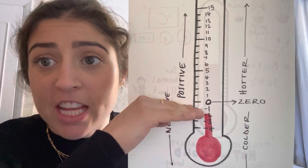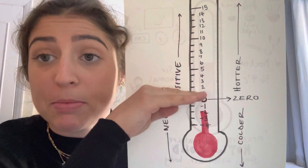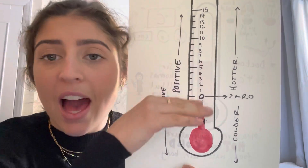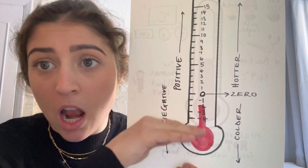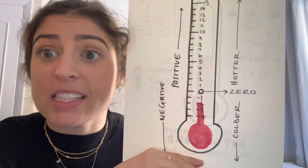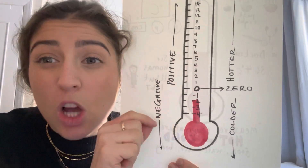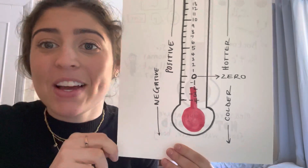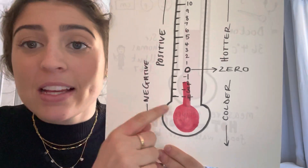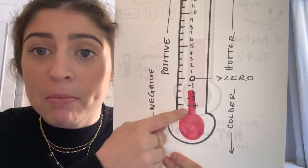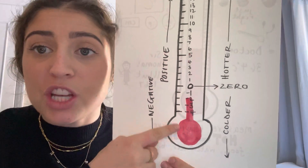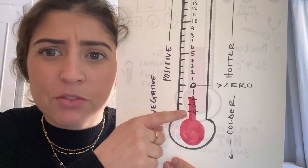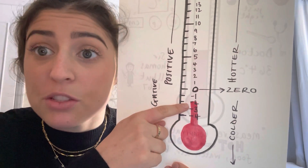So anything above zero is a positive number, which means the numbers are getting hotter and hotter. And anything below or underneath zero means the numbers are getting colder and colder — we might need to go and get our mittens on if it's too cold. So as we can see here, our thermometer is showing us a temperature — not minus 4, not minus 3, it's minus 2.